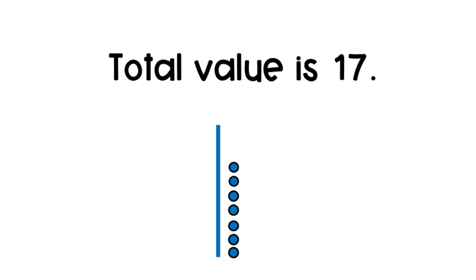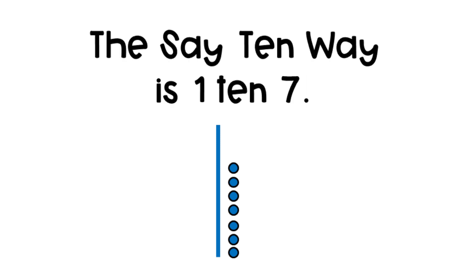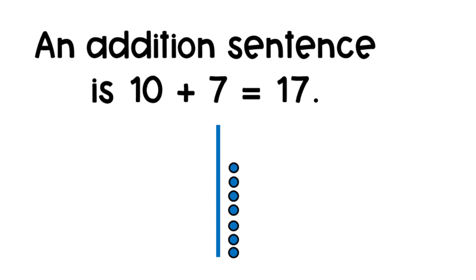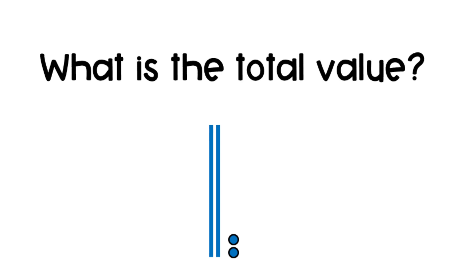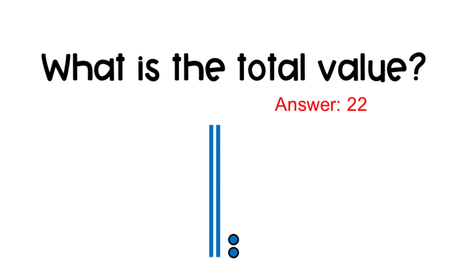The total value of this picture is seventeen. The say-ten way is one ten and seven. There are one ten and seven ones, so an addition sentence is ten plus seven equals seventeen. What is the total value of this picture? Remember, the long bars are tens and the dots are ones. The answer is twenty-two. There are two tens and two ones, so that would be twenty plus two is twenty-two.